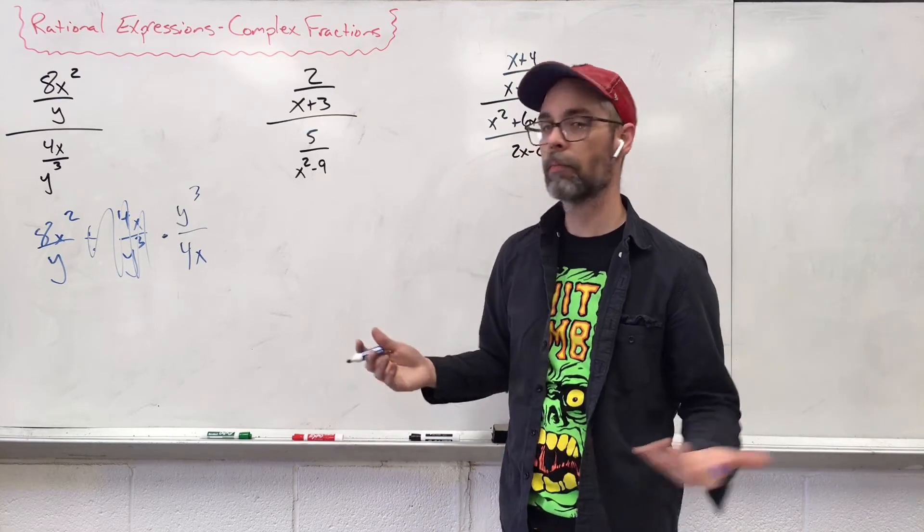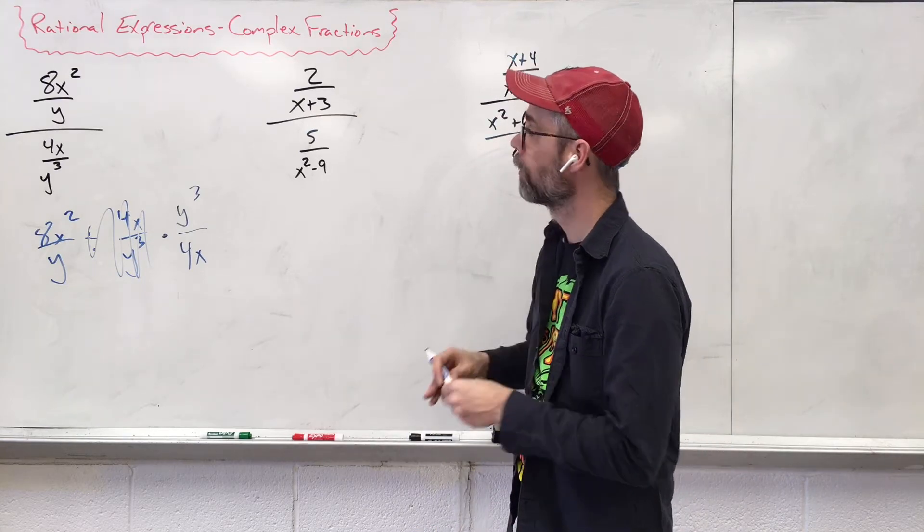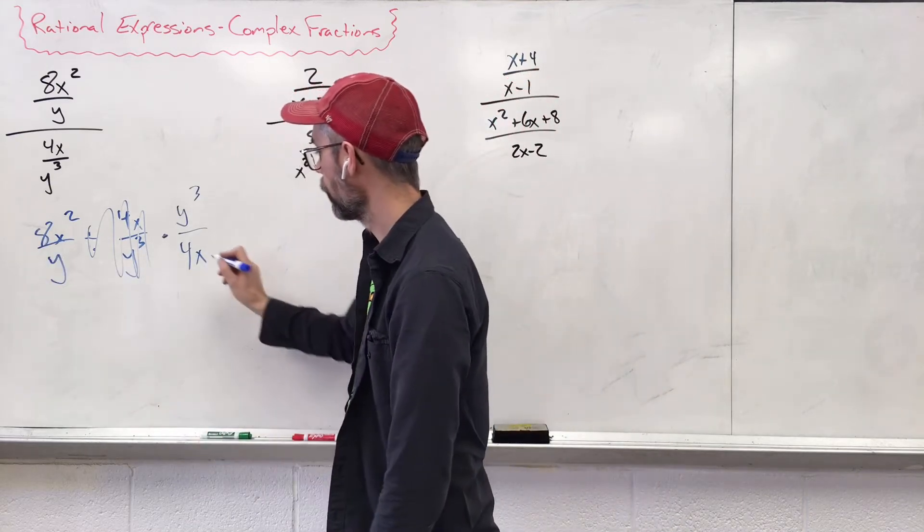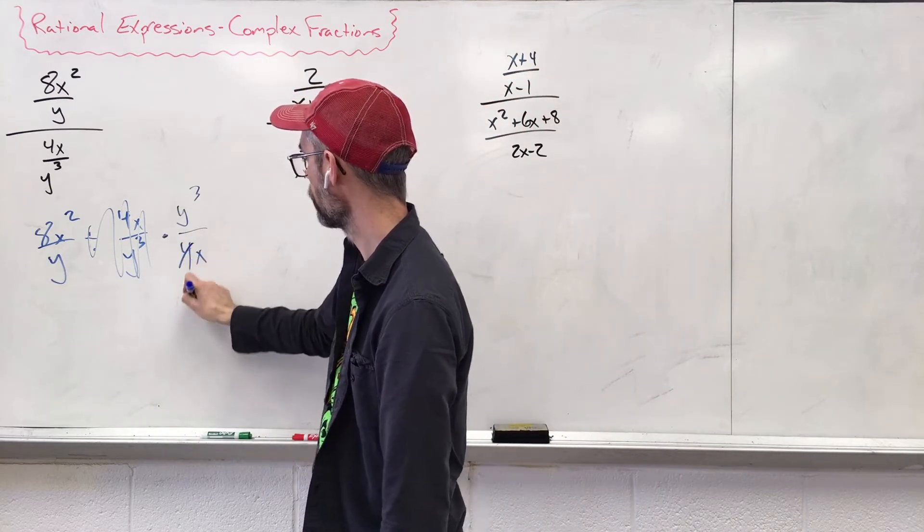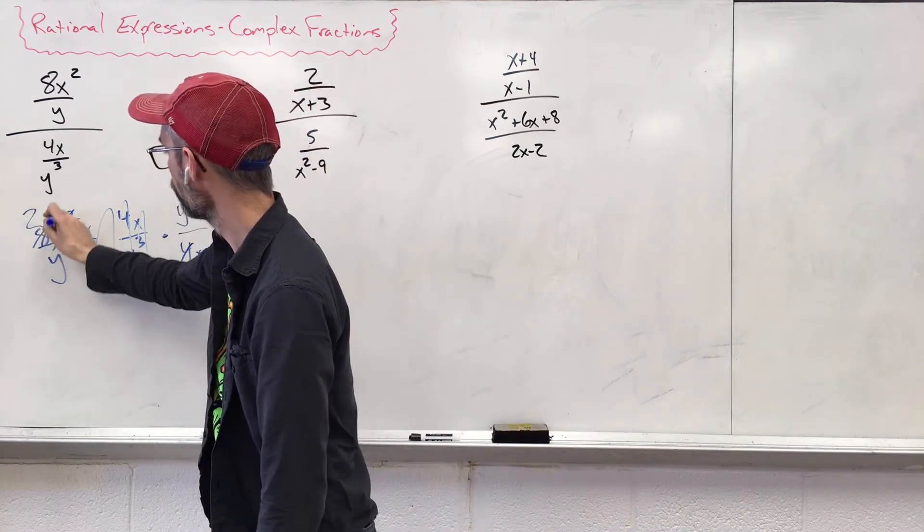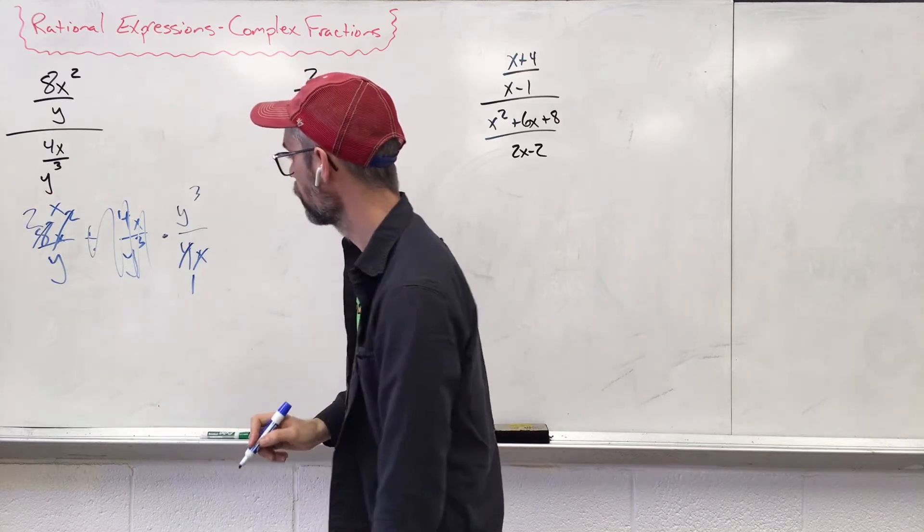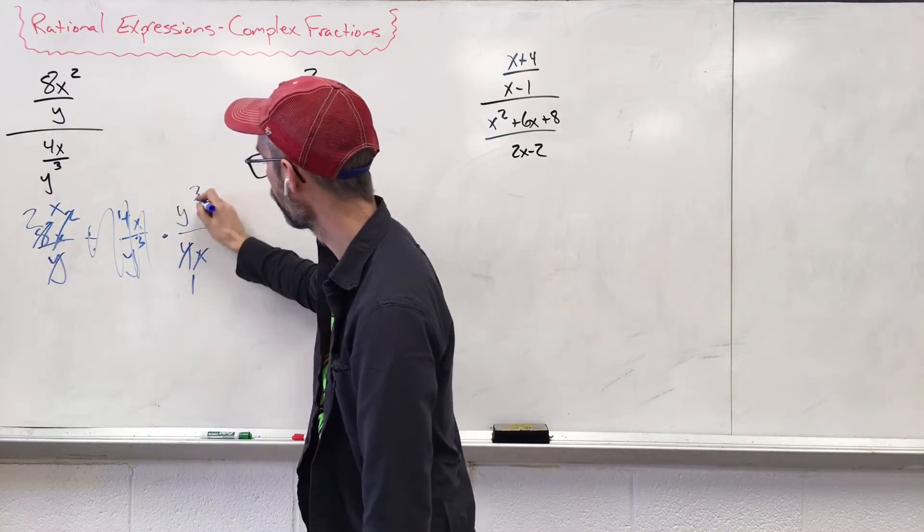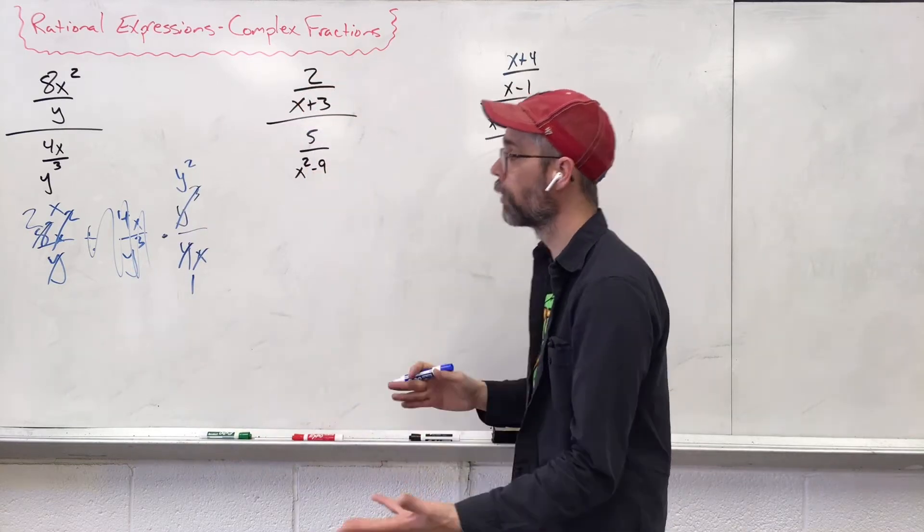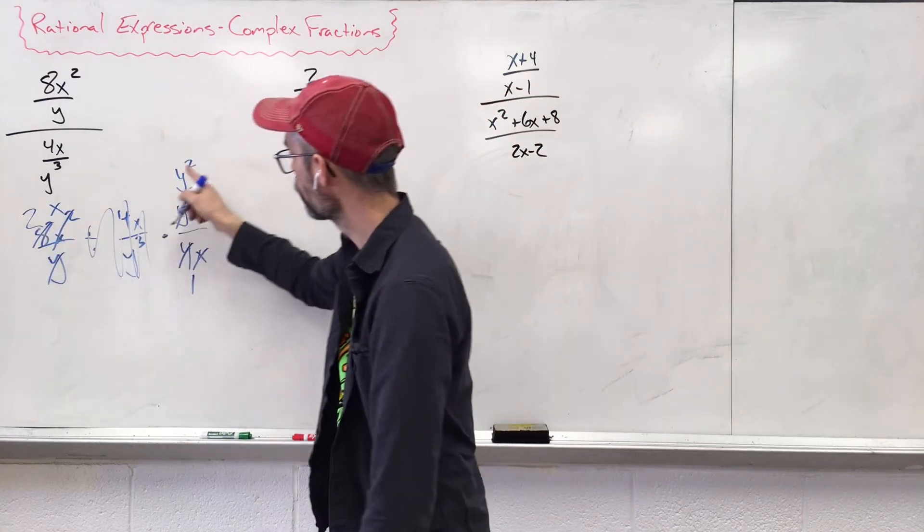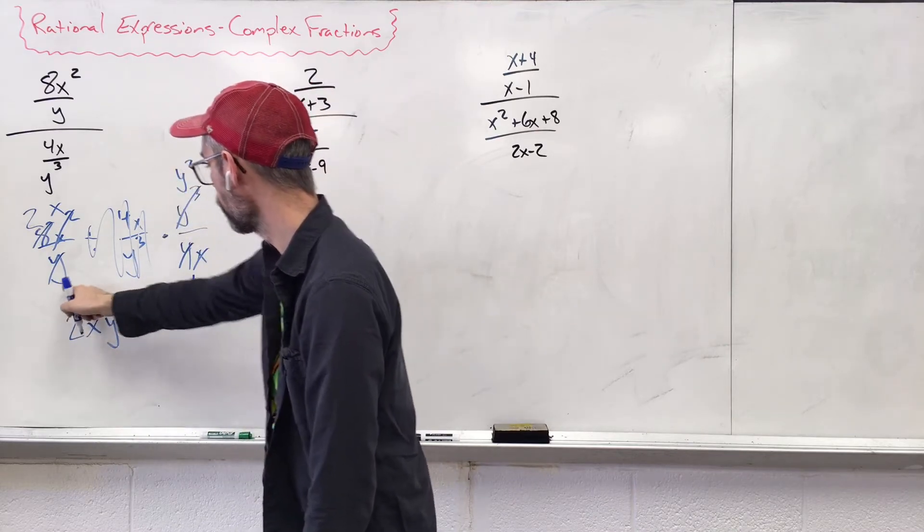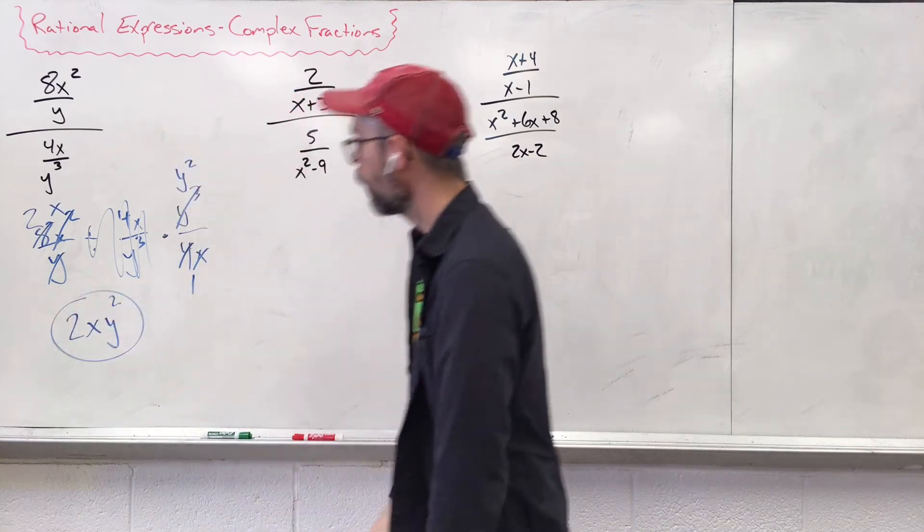Now it's just a matter of simplifying everything that we've already done with rational expressions. Four and eight share the number four. Four goes in there once, four goes here twice. I have x and I have two x's leaving us with one x. I have one y and three y's leaving us with two of them up on the top. What are we left with? Two x y squared. Two x y squared on the bottom. Everything canceled.